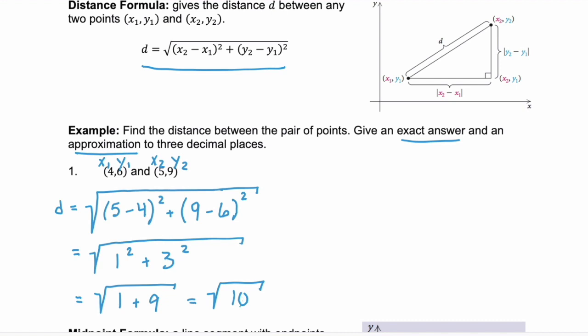Square root of 10 would be our exact answer. And when you plug the square root of 10 into your calculator, you get approximately 3.162. We say approximately because we had to round after that third decimal place. That's why this is an approximation of the exact answer, square root of 10.